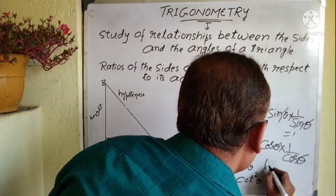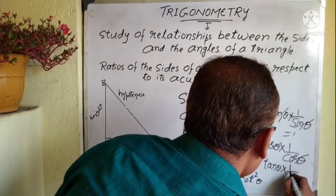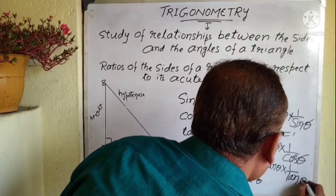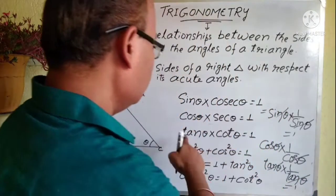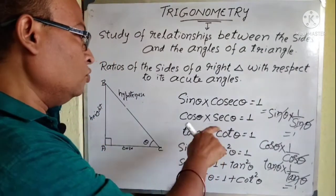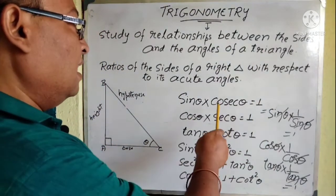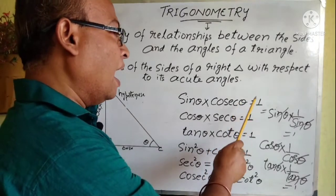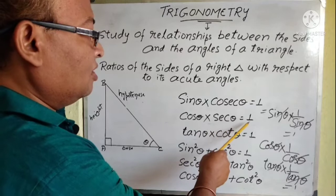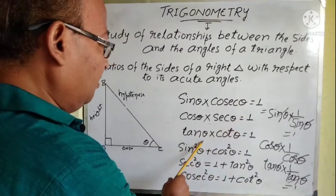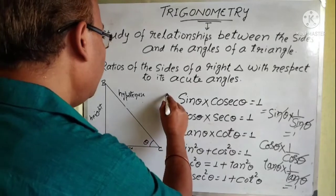Similarly, tan theta into cot theta is 1. Cot theta is 1 by tan theta, so tan theta gets cancelled and equals 1. To summarize: sin theta into cosec theta equals 1, cos theta into sec theta equals 1, and tan theta into cot theta equals 1. You have to keep these in mind.